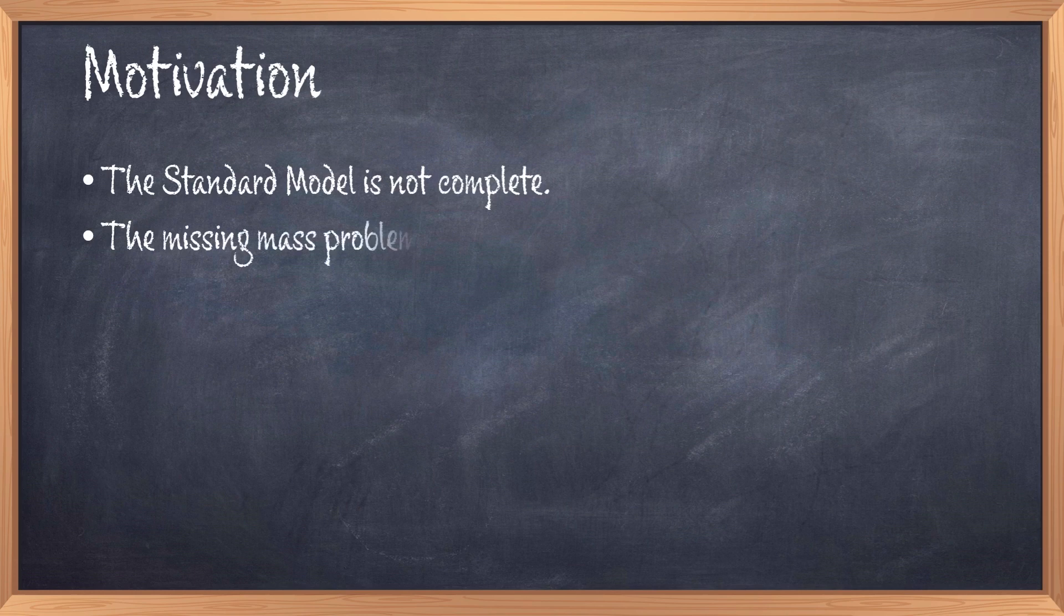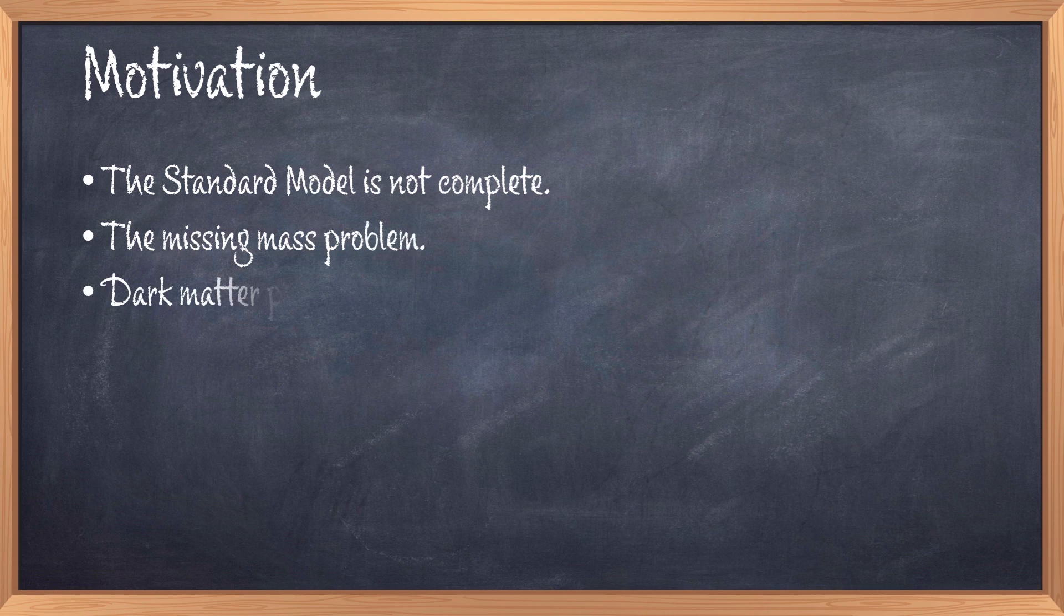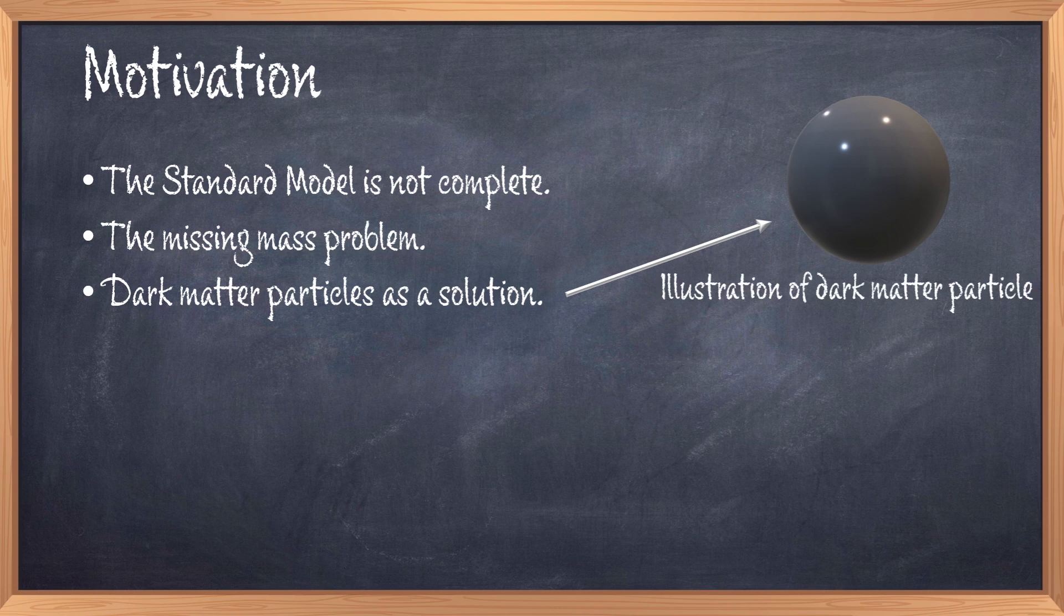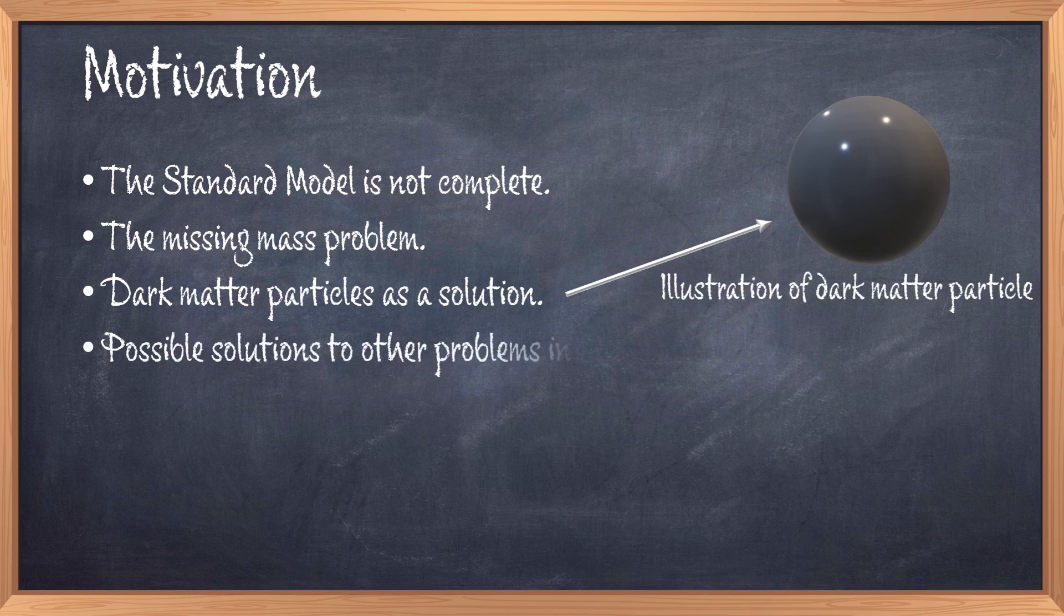There is one problem called the missing mass problem which has existed for more than 100 years. It relates to the fact that when looking around the universe, galaxies and galaxy clusters behave as if there is additional matter in the universe that we can't see. This led to the idea of several theories but one of the most prevalent one is the theory of dark matter. The idea is that there is indeed some extra matter which is not accounted for by the standard model and which we cannot see. In my thesis we look at possible model extensions of the standard model which can add such dark matter particles to the standard model and solve this missing mass problem.